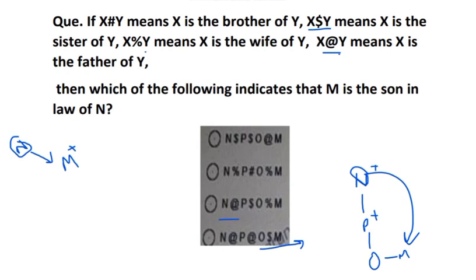Checking another option: N at-the-rate P means N is the father of P - N is positive, N is father. P dollar O means P is the sister of O, so P is negative. O percent M means O is the wife of M. So M is there. Now what we have to find - we have to find the son-in-law. N's daughter's husband is the son-in-law, so option C will be the correct answer.